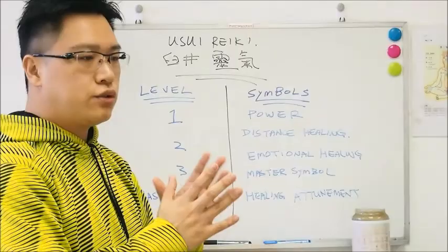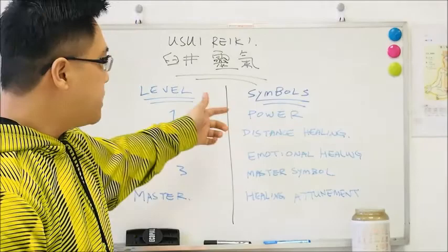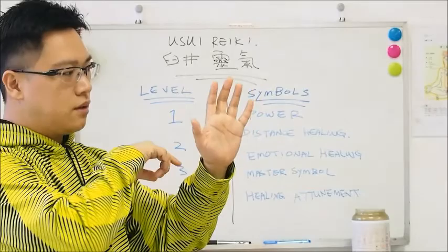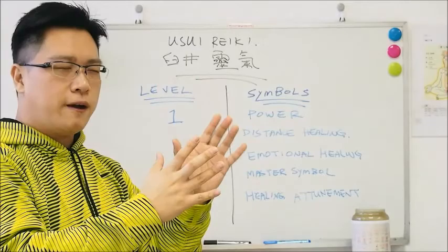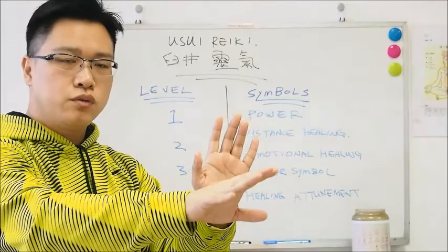So again, in level 1 you start to feel the energy and get attuned to Reiki. In level 2, you are attuned to the three symbols: the power symbol, the distant healing symbol, and the emotional healing symbol. You draw these symbols on your hands — they act like a filter or amplifier — and then apply that energy to your client to enhance healing performance.